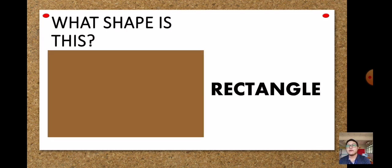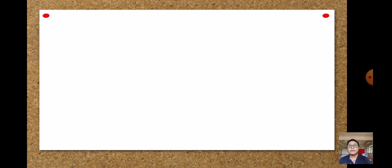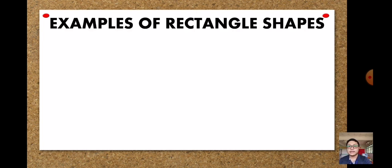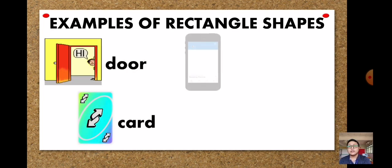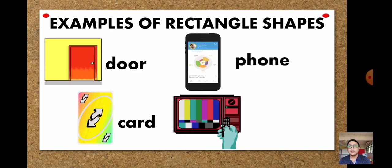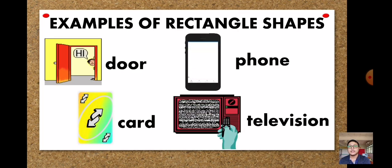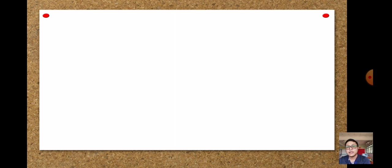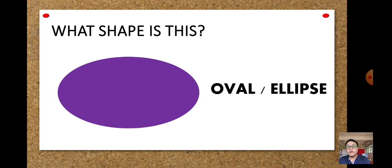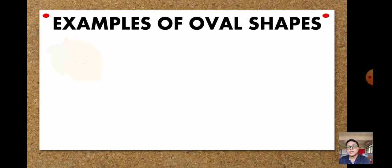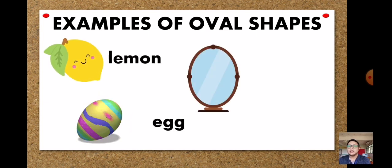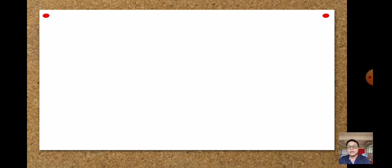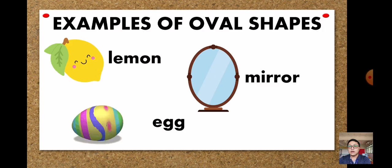Next we have rectangle. Examples of rectangle shapes: we have a door, card, phone, and television. Next we have oval or ellipse. Examples of oval shapes: we have lemon, egg, and mirror.